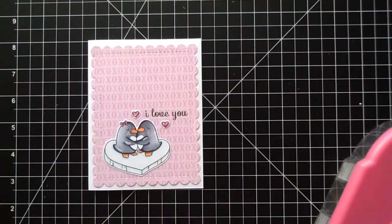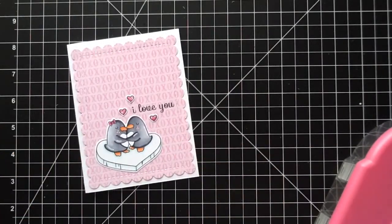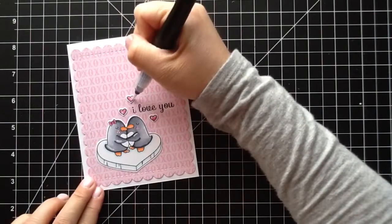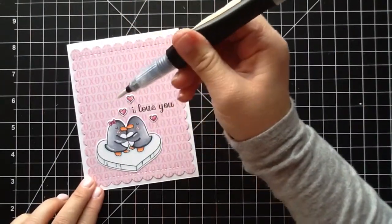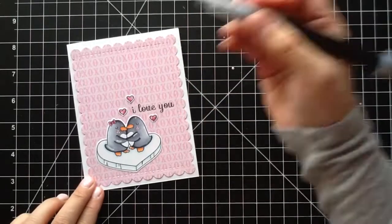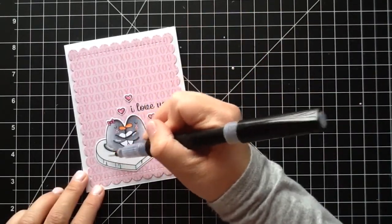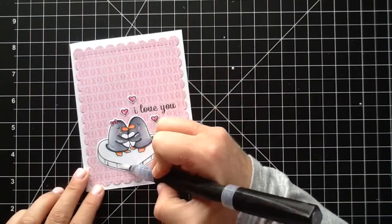I'm going to use the Wink of Stella now for a little bit of added fun. I thought that would be so cute on the little iceberg. I'm adding it to the hearts and then I do that whole iceberg in glitter. As I mentioned, it's really hard to see in the pictures and also in the video. But in person, it is so sparkly. I love it.